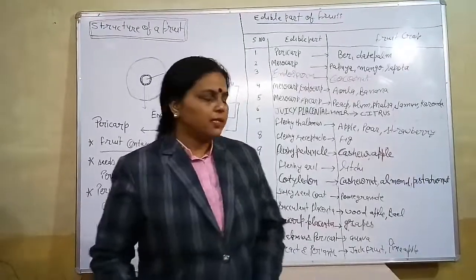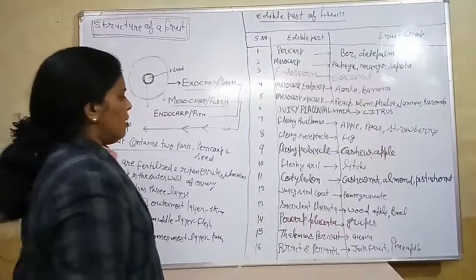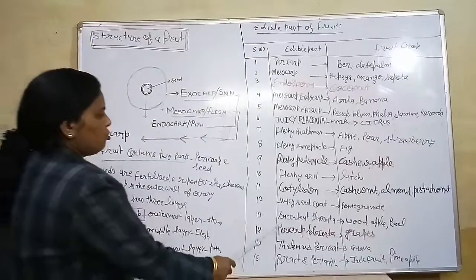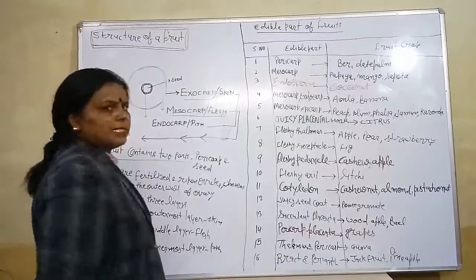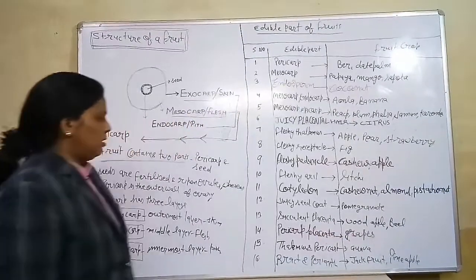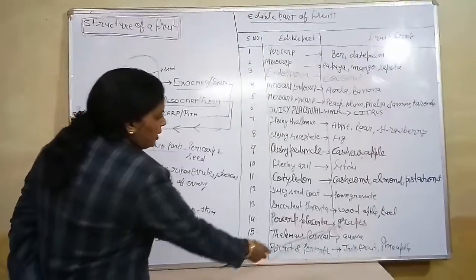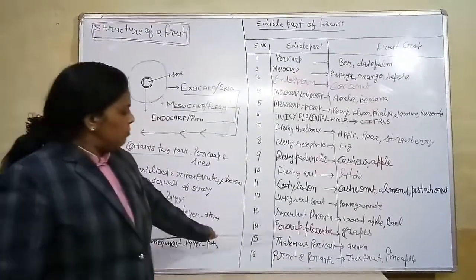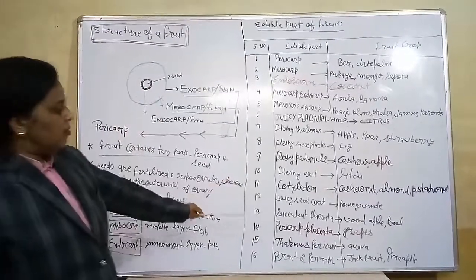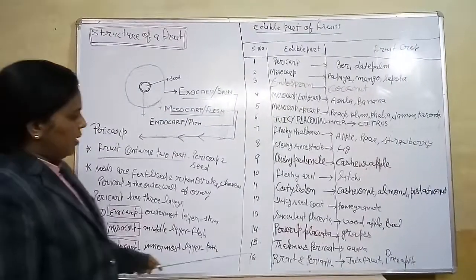The next edible part is cotyledon — cotyledon is an edible part in all sorts of dry nuts like cashew nut, almond, and pistachio nut. The next one is juicy seed coat — in pomegranate, juicy seed coats are the edible portion. The next one is succulent placenta — succulent placenta is the major edible part in wood apple and bean.